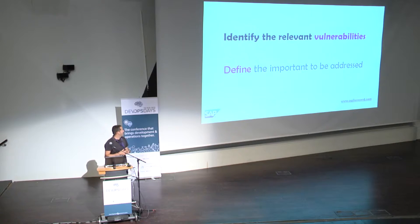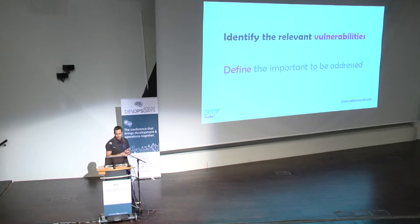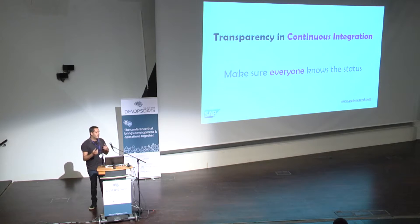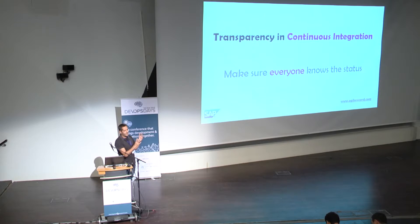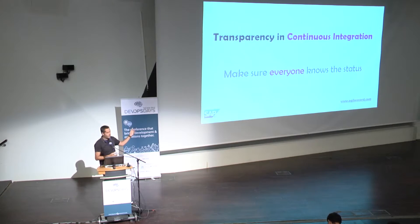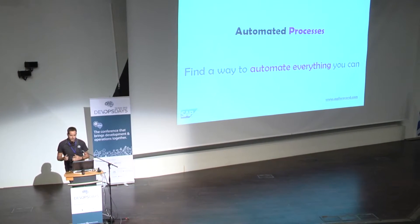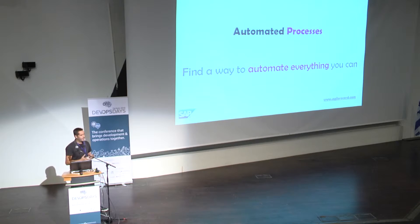The first step is to identify the exact areas that we want to focus on — define exactly the important stuff that we want to scan. The second step is transparency in the continuous integration, meaning if there's an email sent from the CI system, we want to include the security scans inside it, as I will show later. The third step is automated processes — we have to automate everything, with no manual steps while scanning both dynamic and static code.